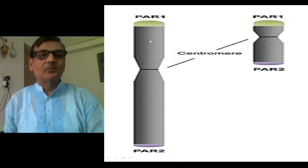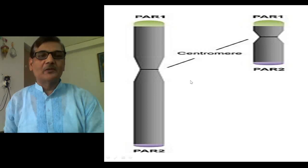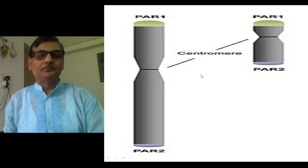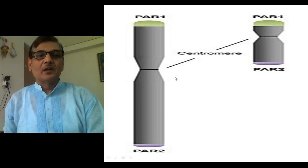This large one is the X chromosome, and this one is the Y chromosome, which is comparatively very small. In the case of mammals, including humans, we are XY types — that is, males are XY whereas females are XX. These are the two sex chromosomes. Besides autosomes — 22 pairs of autosomes in our case — we have sex chromosomes X and Y.